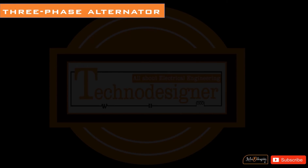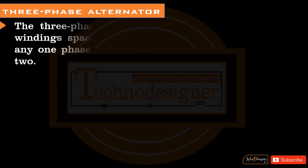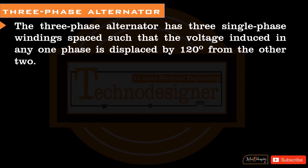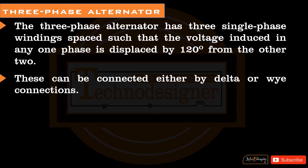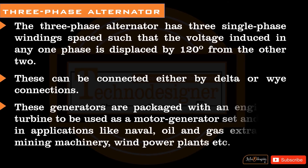The three-phase alternator has three single-phase windings spaced such that the voltage induced in any one phase is displaced by 120 degrees from the other two. These can be connected either by delta or Y connections. These generators are packaged with an engine or turbine to be used as a motor generator set, and used in applications like naval, oil and gas extraction, mining machinery, and wind power plants.